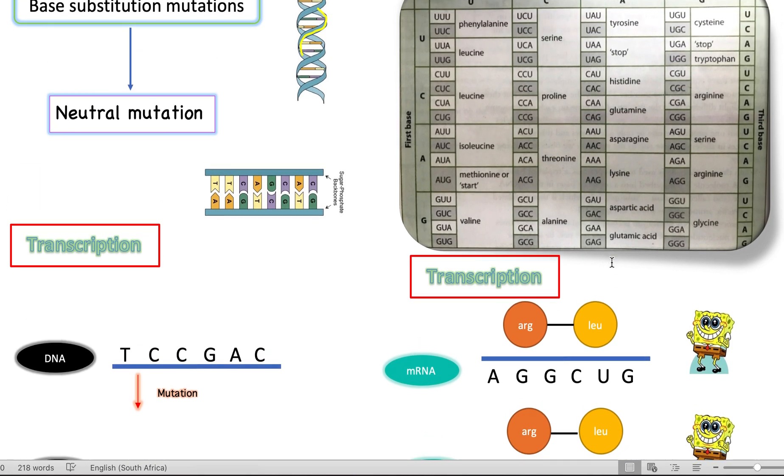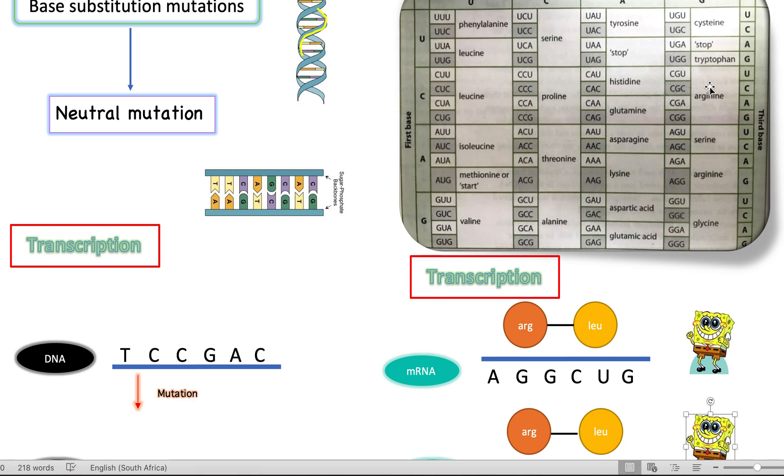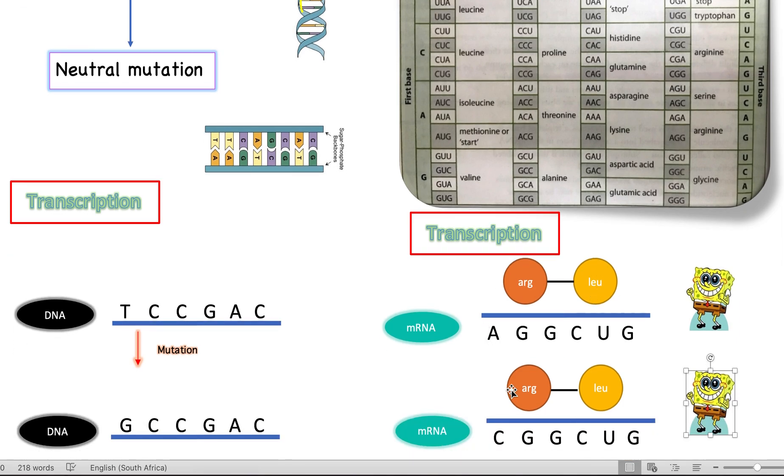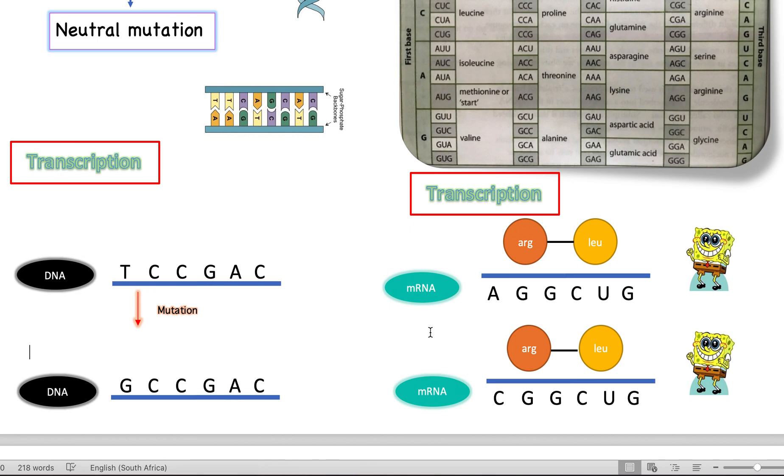You can see here why this makes sense because arginine, this protein can be coded for by so many different things. It's been coded by four, five, six, so many. Arginine can be coded for by six different codes. So even though your code changed, it might still bring the same amino acid, which means that the final protein is still the same. This is called a neutral mutation. When the mutation leads to the same product, and so there's no disease.